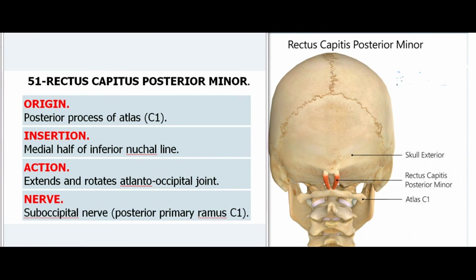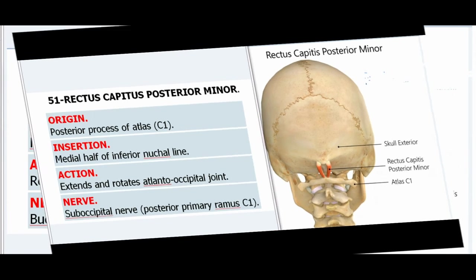51. Rectus Capitis Posterior Minor. Origin: Posterior tubercle of atlas (C1). Insertion: Medial half of inferior nuchal line. Action: Extends and rotates atlanto-occipital joint. Nerve: Suboccipital nerve, posterior primary rami of C1.